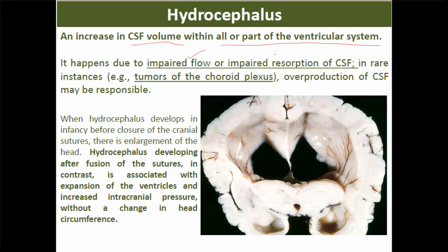Hydrocephalus happens due to impaired flow or impaired resorption of the cerebrospinal fluid. The CSF is resorbed by the arachnoid granulations, so any block there can cause hydrocephalus. In rare instances, a tumor of the choroid plexus — which is where CSF is produced — can cause overproduction of CSF and lead to hydrocephalus.